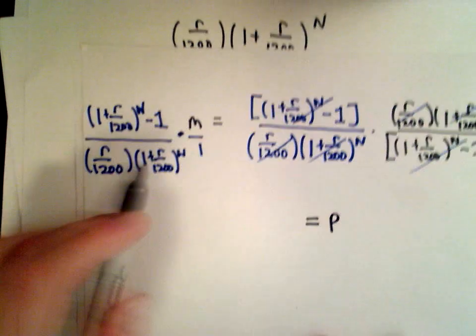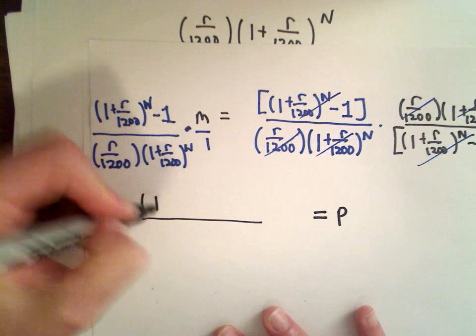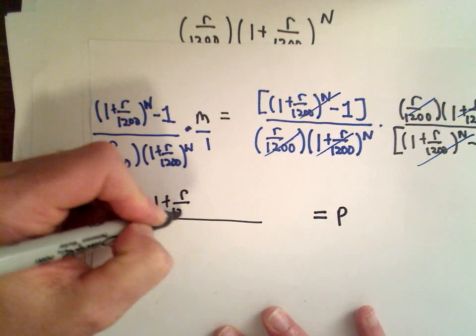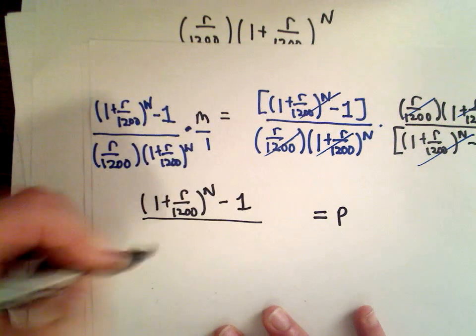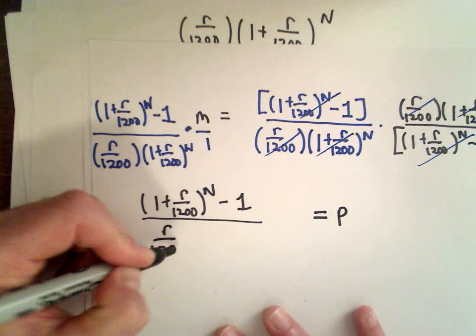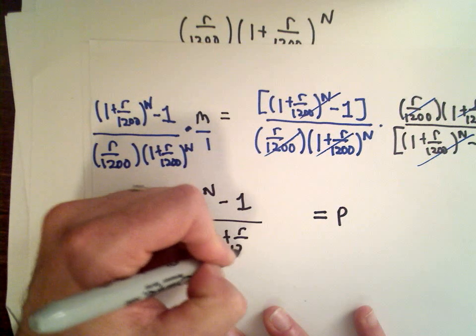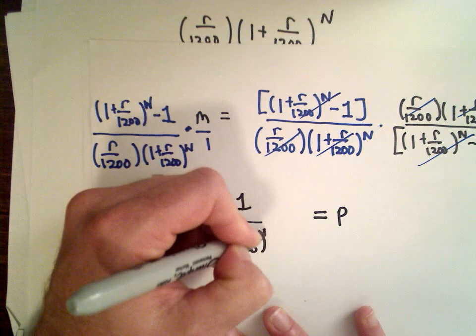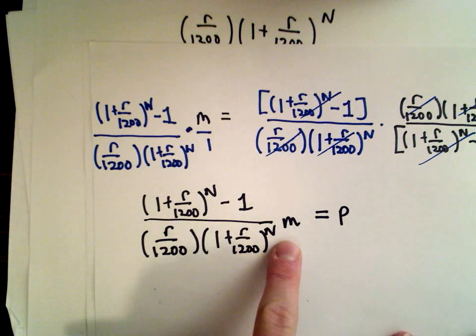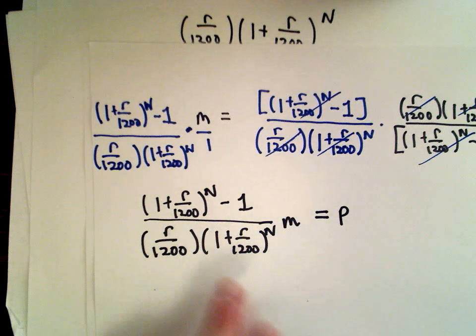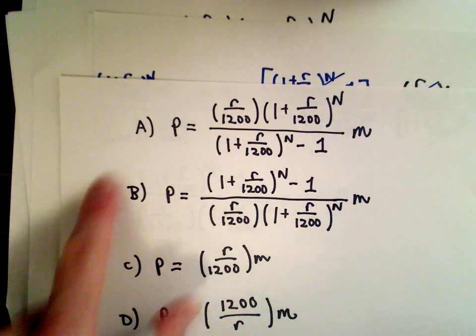So there's our P equals. And again, there's nothing really to do on the left. I think the answer choice had it just written like this. So I'm just going to rewrite it one more time. It's the exact same thing that we just had. Raised to the power of N. And then they had the M sticking off to the side. And again, that just means you're multiplying by M over 1. So that's it. So I believe that was answer choice B would be the correct answer.